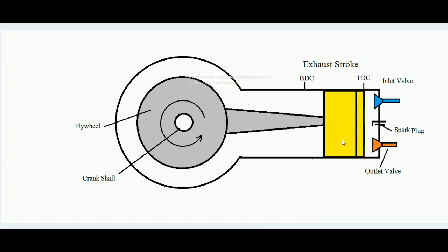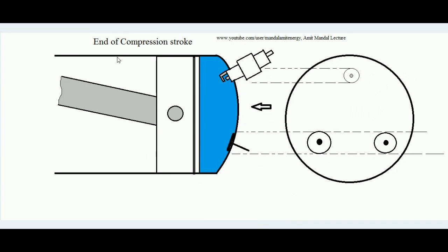Now we have to focus only on the action of combustion inside the cylinder. Suppose this is the end of the compression stroke — this is an indicative schematic diagram of an engine. This is the piston, this is the cylinder head. In the side view from the top, the cylinder head looks like this: these are the two valves — this is the outlet valve and this is the inlet valve. This is the spark plug and this is the cylinder head.